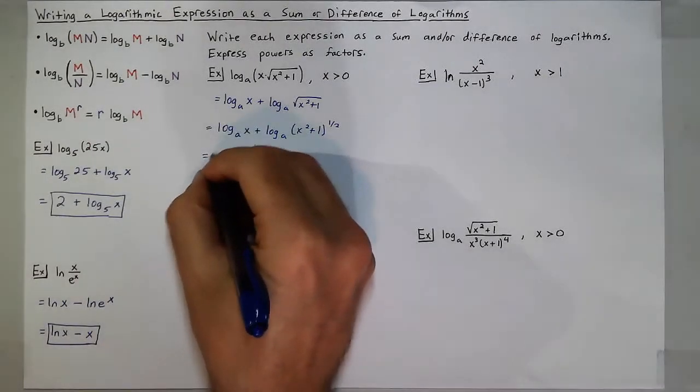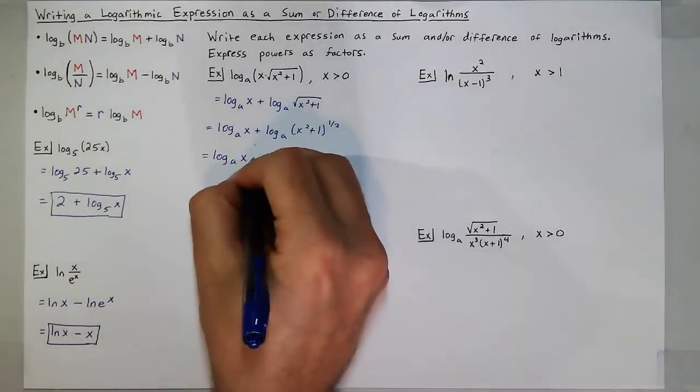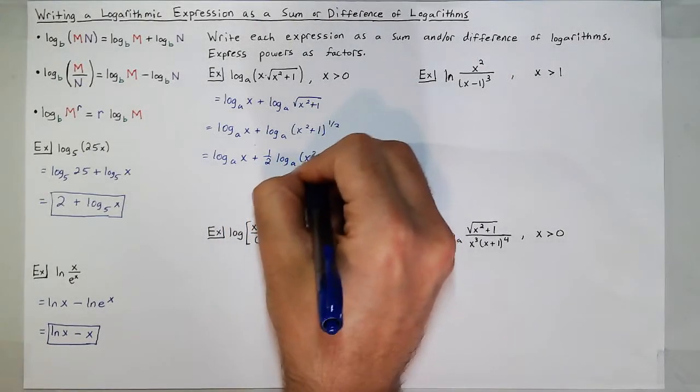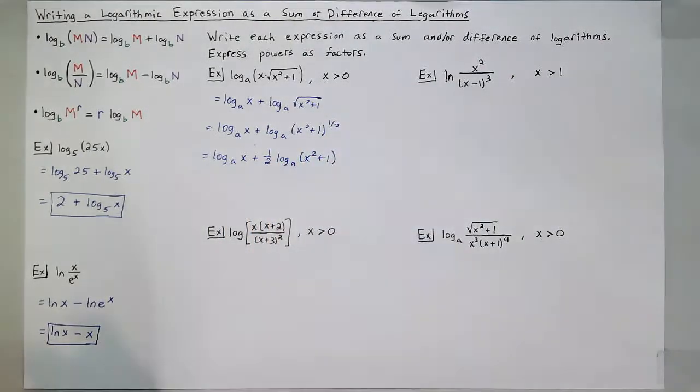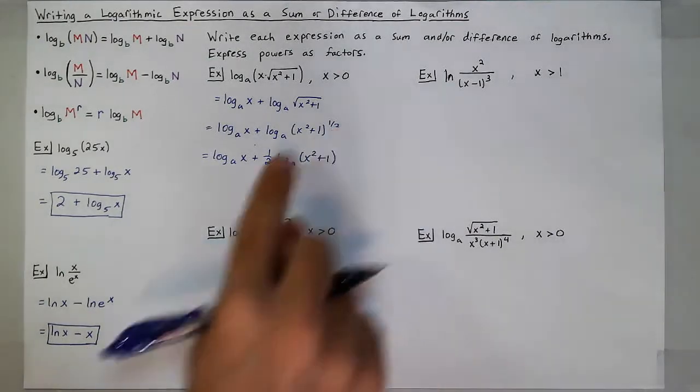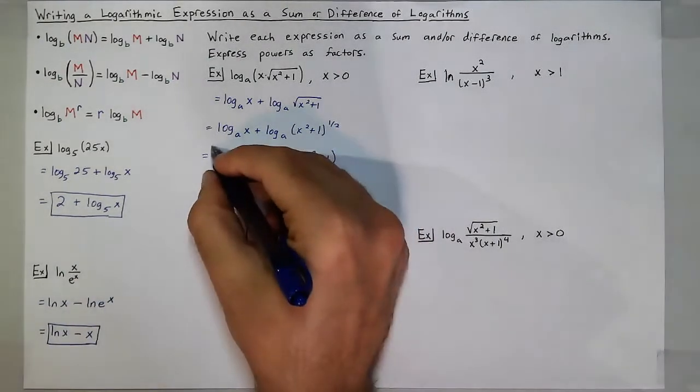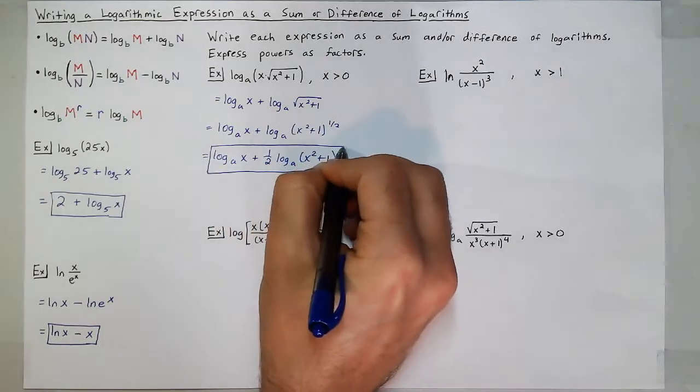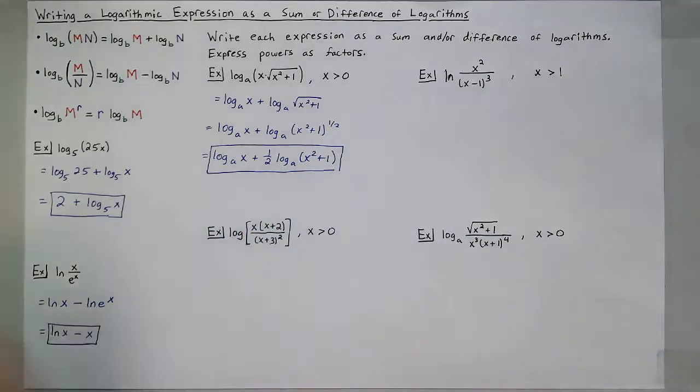So I'll get log base a of x plus 1 half log base a of x squared plus 1 to finish off the problem. So all powers must become factors in front of the logs, and we've expanded this. In some ways, this could be seen as simpler than just shoving all these variables together, but you'll always have to make that judgment for yourself on problems in the future.